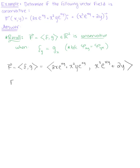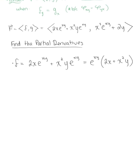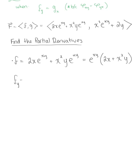We're ready to go ahead and find the partial derivatives. Starting with f, which is 2x times the natural exponential raised to the xy, plus x squared y times the natural exponential raised to the xy, we want to differentiate with respect to y. I'm going to pull out the natural exponential raised to the xy and have this multiplied by 2x plus x squared y, so we need a product rule.